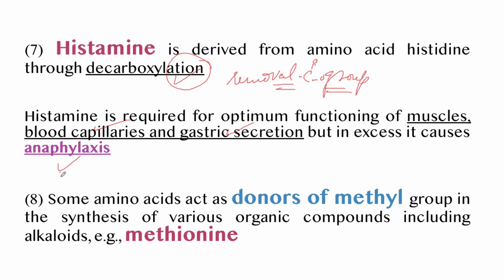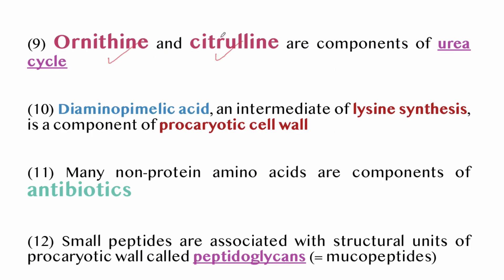Histamine is required for the optimum functioning of muscles, blood capillaries, and gastric secretion, but in excess it causes anaphylaxis — an extremely severe allergic reaction where the immune system releases histamine. The excessive immune response to an allergen causes tightening of the airways and difficulty breathing, which can be fatal if not properly treated. Some amino acids, like methionine, act as donors of methyl groups (CH3) in the synthesis of various organic compounds including alkaloids.